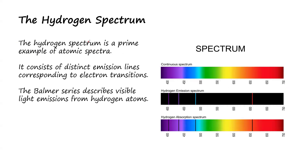The hydrogen spectrum is a prime example of atomic spectra. It consists of distinct emission lines corresponding to electron transitions. Each and every element has its own unique lines. For example, the Balmer series describes visible light emissions from hydrogen atoms. Each of the lines has its own name for each and every element.